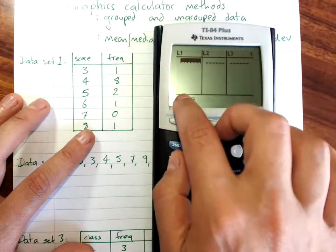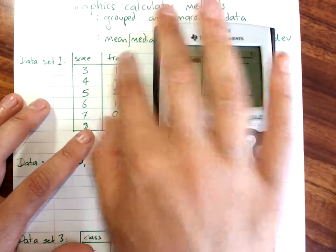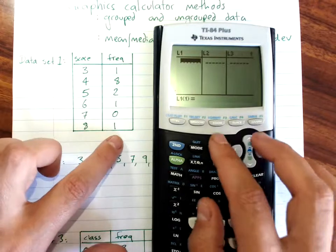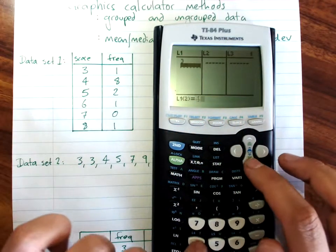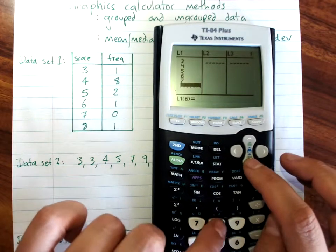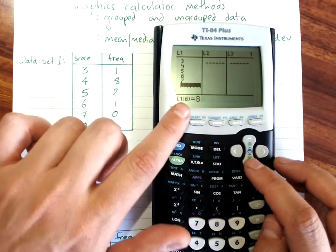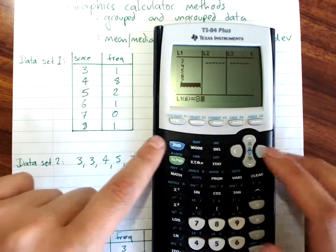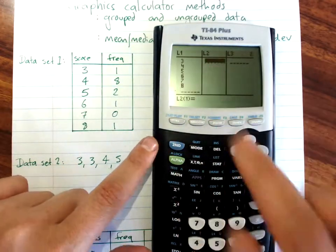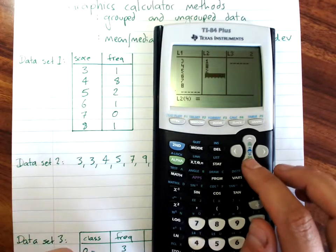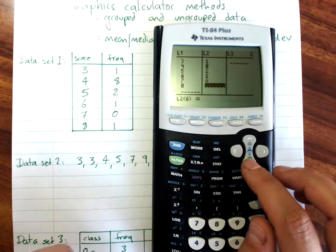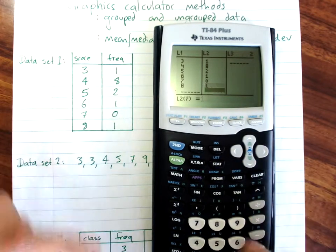Now list one is what you use for your data, and list two for the frequency if you're using it. So my different scores go down list one, and list two takes the frequency. So your data is entered.